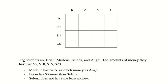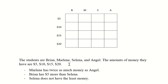We have four students whose names I randomly took from my first period. The students are Brian, Marlene, Selena, and Angel. And then I have amounts of money. The amounts of money they have are five dollars, ten dollars, fifteen dollars, and twenty dollars.